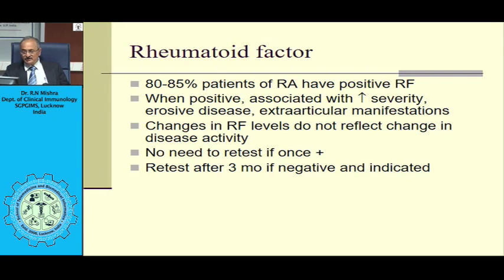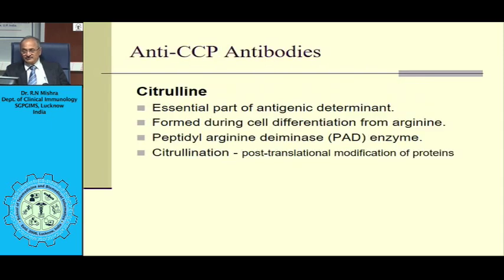Antibody to RA-33 is an ANA-based fluorescent test from an earlier era, essentially a precursor to CCP testing. This test is no longer offered by labs; we have all changed over to antibody to CCP.